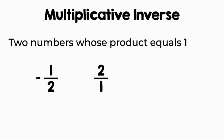Is negative one half and two over one multiplicative inverses? Well, let's multiply and find out. When you multiply these two, you will get negative two over two. Simplified, that equals negative one. So no, they are not multiplicative inverses because their product is negative one.